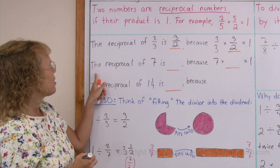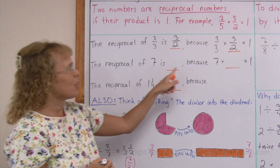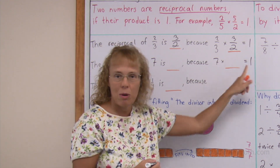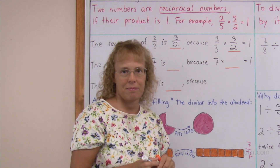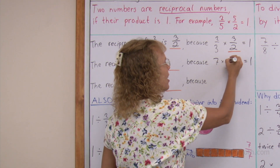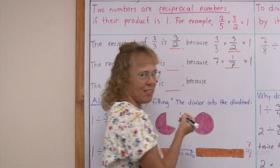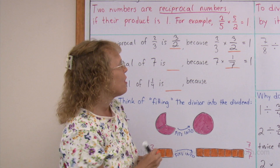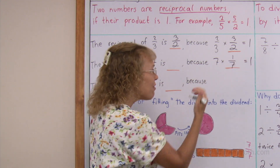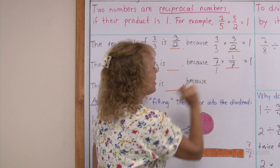Then, the reciprocal of 7. Think about this multiplication: 7 times what equals 1? You can probably see that 7 times 1 seventh gives 1. If you think of 7 as 7 over 1, then its reciprocal is 1 over 7.